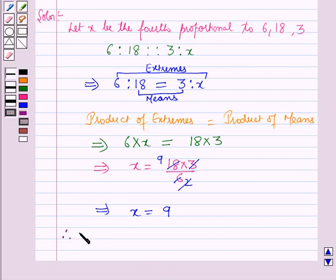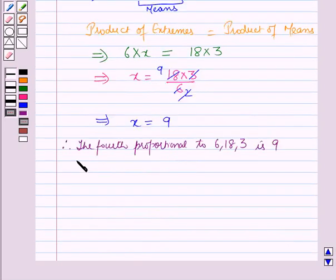Therefore, the fourth proportional to 6, 18, and 3 is 9. This is the solution to this question. That's all for this session. Hope you all understood.